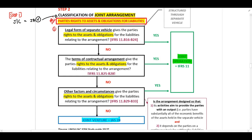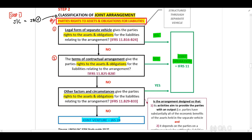The first element: we need to ask about the legal form of the separate vehicle. Does this give the parties rights to the assets and obligations for the liabilities relating to the arrangement? If the answer is yes, this is a joint operation. If the answer is no, we need to refer to our second question: what are the terms of the contractual arrangement? Does this give the parties rights to assets and obligations for liabilities relating to the arrangement? If our answer is yes, this is a joint operation. If the answer is no, we need to ask a third question.